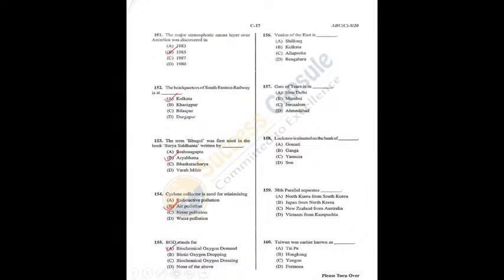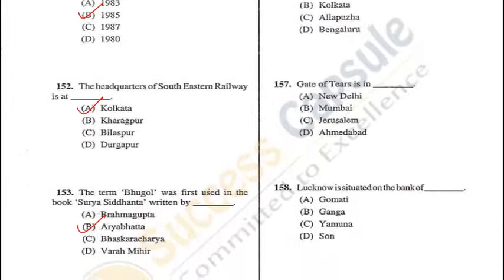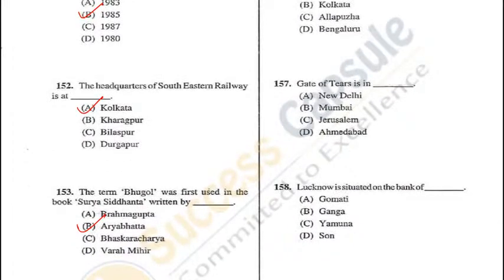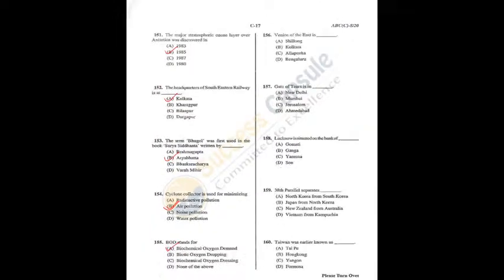Question 156: Venice of the East — the title is given to Alappuzha in Kerala — C is the correct answer. Question 157: Gate of Tears is in Jerusalem — C is the correct answer. Question 158: Lucknow city is located on the banks of the Gomati river — A is the correct answer. Q156 = C, Q157 = C, Q158 = A.